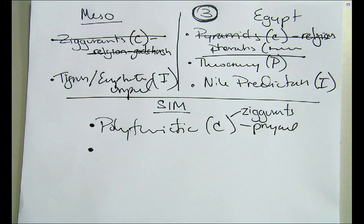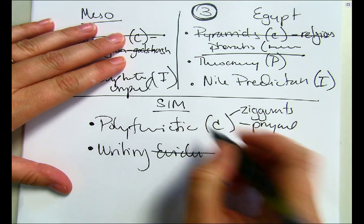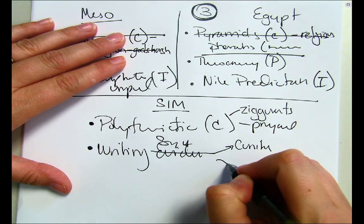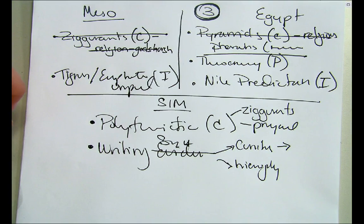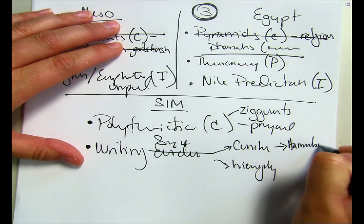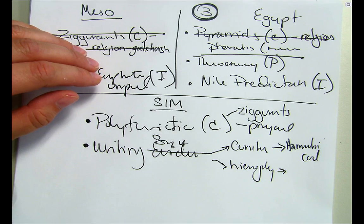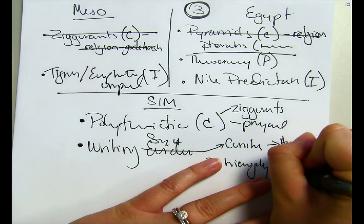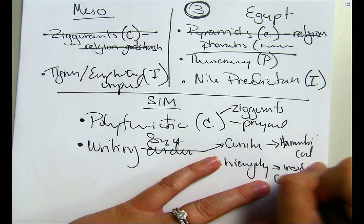Another similarity: both had writing systems. Evidence—cuneiform and hieroglyphics. For cuneiform, you can cite Hammurabi's Code. For hieroglyphics, you can cite inscriptions inside the Great Pyramid of Giza.